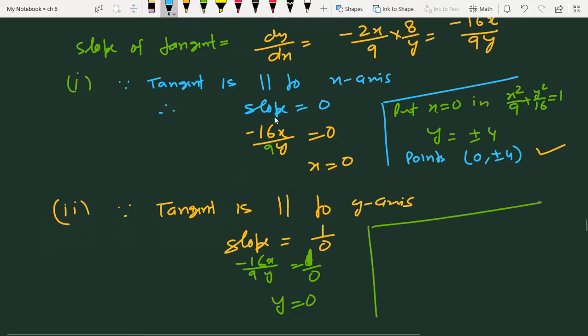Put y = 0 in the given equation. We get x = ±3.